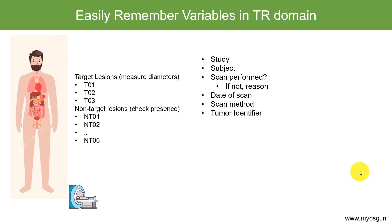We also collect the tumor identifiers. In the TU domain we give a unique number to each tumor identified — for target lesions we use T01, T02, etc., and for non-target lesions NT01, NT02, etc. All those tumors are assessed during post-baseline assessments. The identifier tells us which tumor we are measuring — T01, T02, etc. — and the tumor measurement captures the diameter of the target lesion, or for non-target lesions whether it is present or absent.